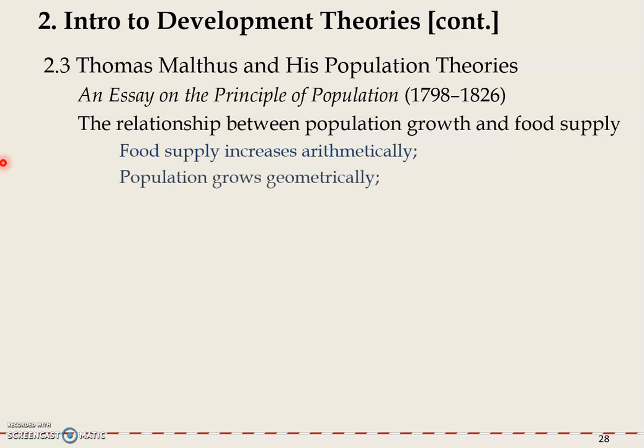Malthus also pointed out that population grows geometrically — meaning it goes from 1 to 2 to 4 to 8 to 16 to 32, and so on. So when we put these two together, we would find that sooner or later the population would outpace the food supply.